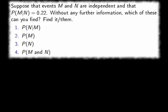Suppose that events M and N are independent and that the probability of M given N is 0.22. Without any further information, which of these can you find? Find it, or them.